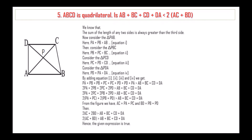Next: ABCD is a quadrilateral. Is AB plus BC plus CD plus DA less than 2(AC plus BD)? We know that the sum of the length of any two sides is always greater than the third side. Consider triangle PAB: PA plus PB is greater than AB. Consider triangle PBC: PB plus PC is greater than BC.